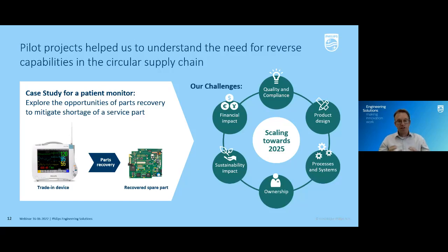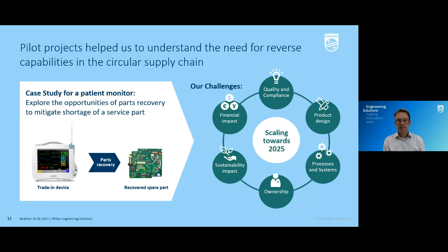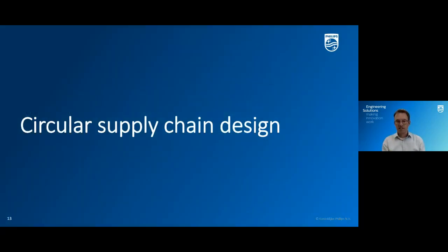So from that, we learned that in order to scale towards 2025 — moving to tens of thousands of devices per year — we have to work on all of these challenge areas. That's where we said: we have to now move to a structural design of our circular supply chain, to enable all the processes and organization needed for scaling. And that's where we move to the next topic: circular supply chain design.